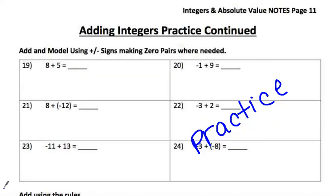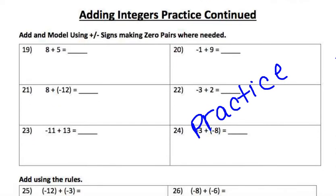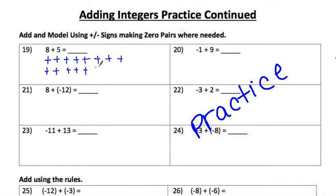The next page is your practice. For these you're drawing plus signs and minus signs. This is positive 8 — draw eight positives — and then positive 5. There's no canceling here, so just count them up: 13. For the ones marked 'model,' I want you to actually draw the picture.